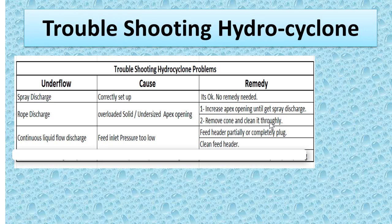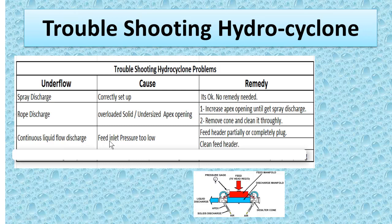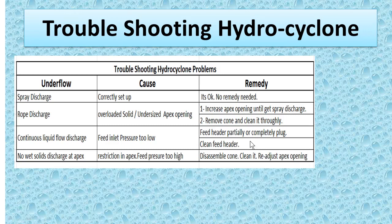Continuous liquid flow from discharge: what can be the cause? Feed inlet pressure too low. Remedy: check if the feed header is partially or completely plugged, and clean the feed header.